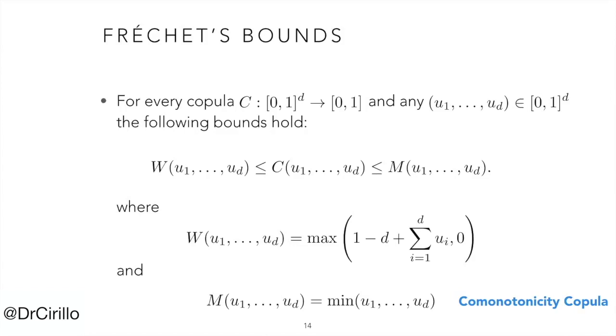Remember that under comonotonicity the value at risk is coherent. It is one of the few cases. The lower bound W is not a copula, not in general. It is a copula only in the bivariate case, and in that case it is called counter-comonotonicity copula. It represents the case of perfect negative linear dependence.